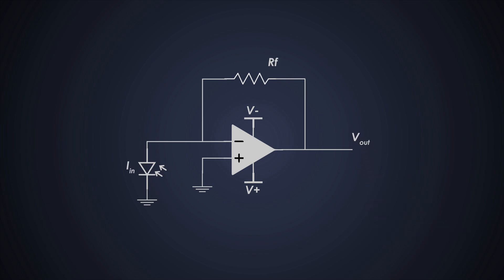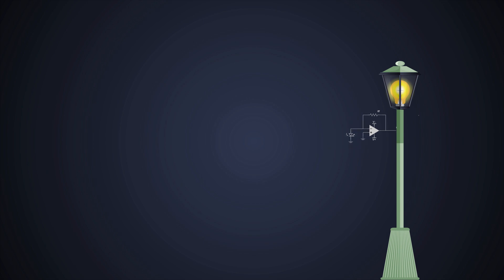Imagine using this trans-impedance amplifier in a light sensor for an automatic street light. During the day, the photodiode generates a high current due to sunlight, resulting in a higher output voltage from the trans-impedance amplifier. This signal then can be used to turn off the street light.